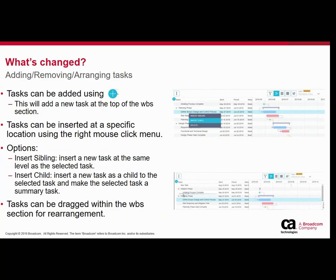You can also interact with the WBS section using a right mouse click on any specific task, which brings up a menu. From that menu you can insert a new task as a sibling of the selected task, insert a child task underneath the selected task, or delete the selected task. If you don't want to use right-click, you can use the plus icon at the top of the screen, which inserts a new task at the very top of your WBS. You can also drag and drop a task from one summary task to another.